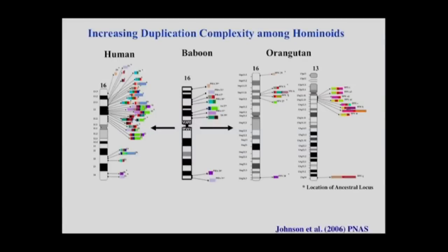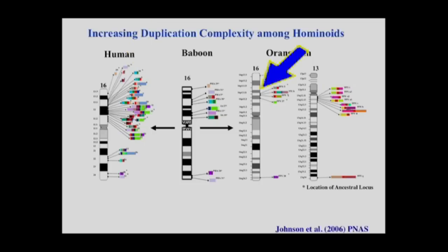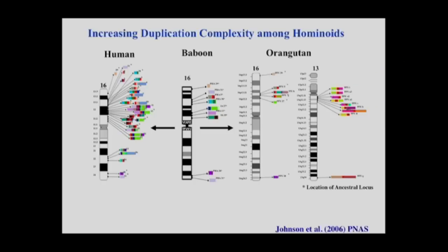Similarly, looking at our cousins the orangutan, we can see similar patterns where duplications have burst onto the scene — not as complex nor as prolific as what we've seen in humans — but all of these sequence colors are different from what we see in humans, except for the one core sequence which has jumped to completely independent locations on different chromosomes during the course of evolution.